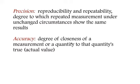So precision is the reproducibility and repeatability, or the degree to which a repeated measurement under unchanged circumstances shows the same results. Accuracy is the degree of closeness of a measurement or a quantity to that quantity's actual value, to the true value.